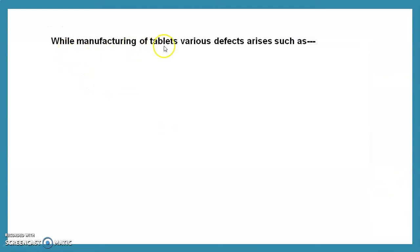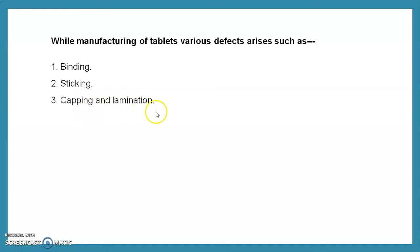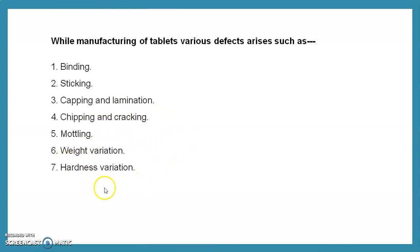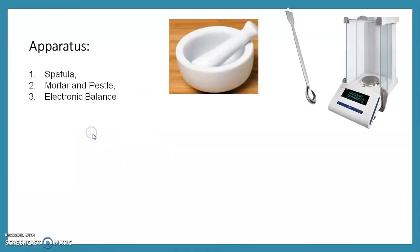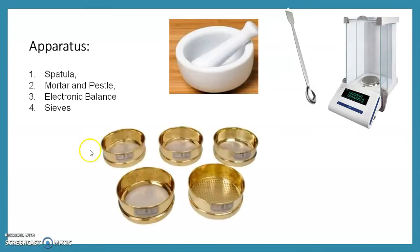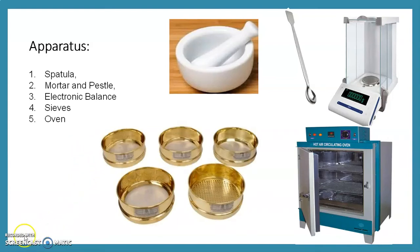During manufacturing of tablets, various defects may arise: binding, sticking, capping and lamination, chipping and cracking, mottling, weight variation, hardness variation, double impression, and tablet expansion. The apparatus required for today's experiment includes a spatula, mortar and pestle, electronic balance, sieves of different sizes, and a hot air oven for granulation.